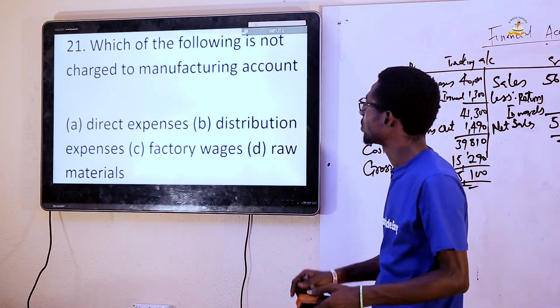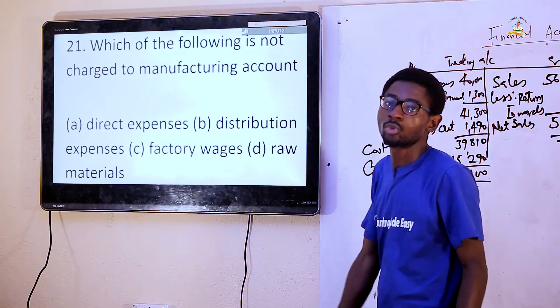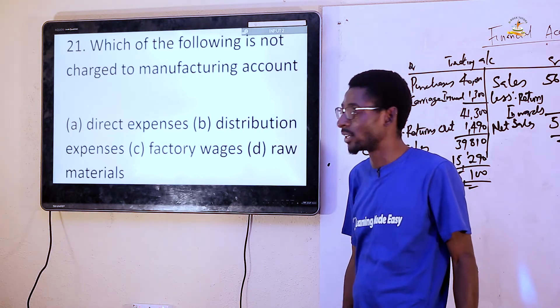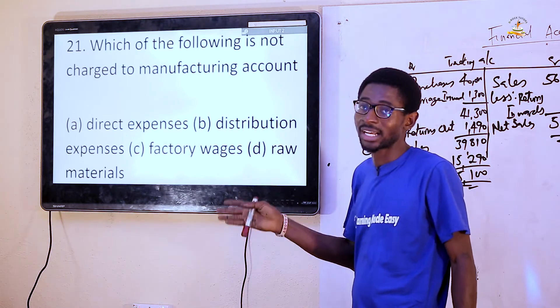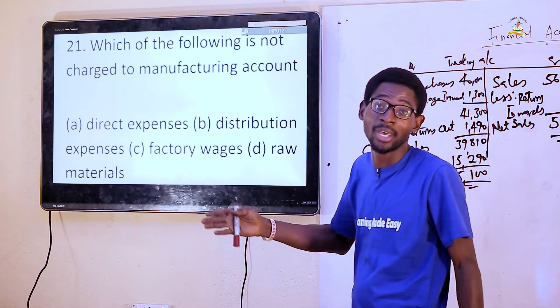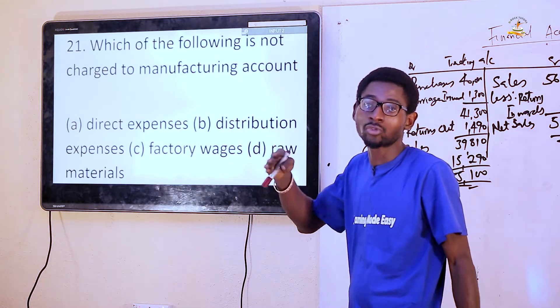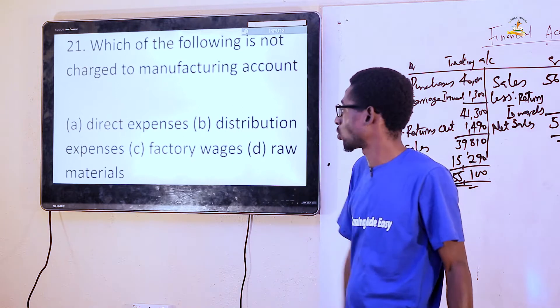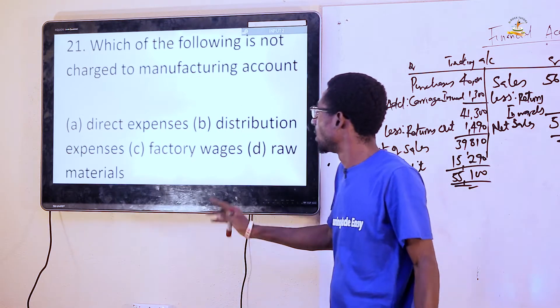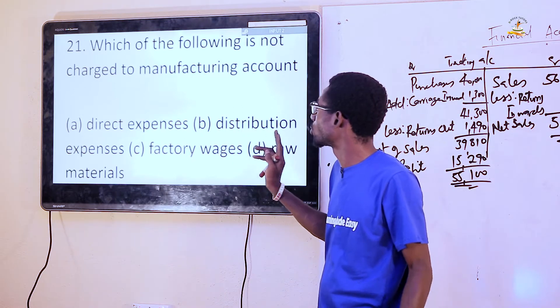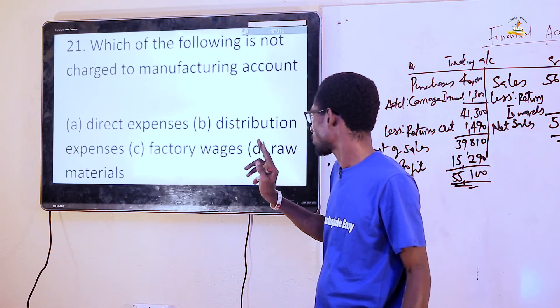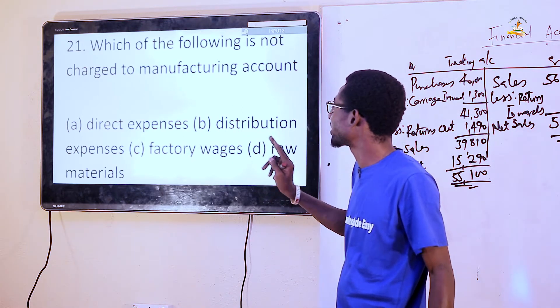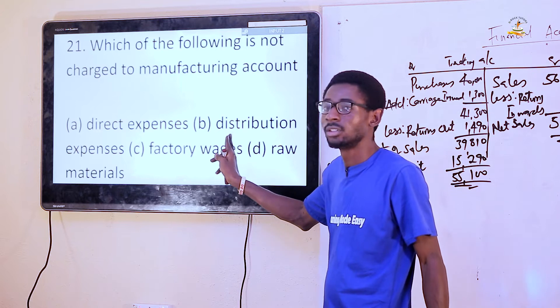The following is not charged to manufacturing accounts. Manufacturing accounts is an account used to prepare the cost of production. So the answer is option D.